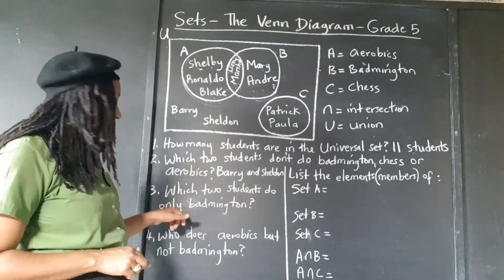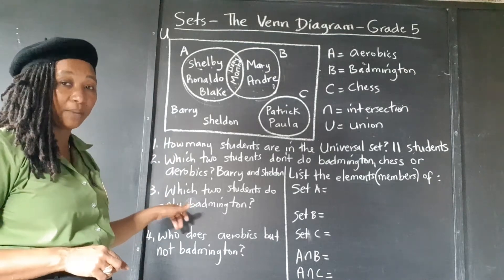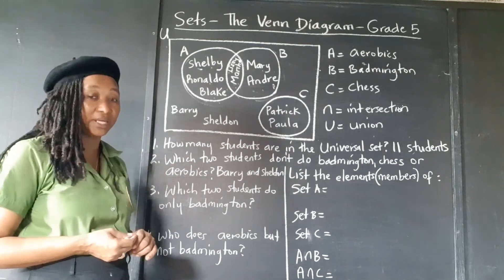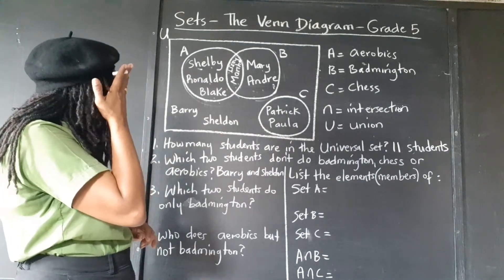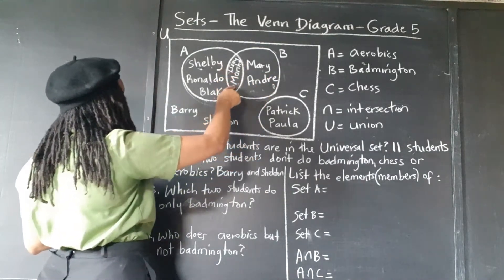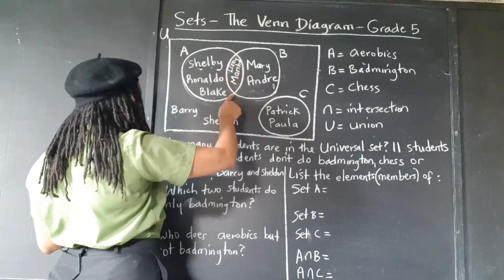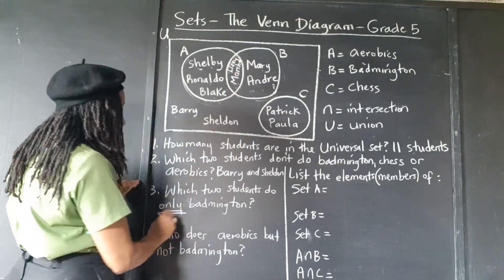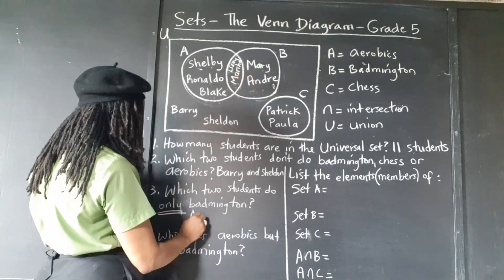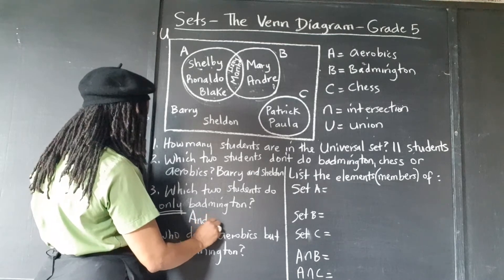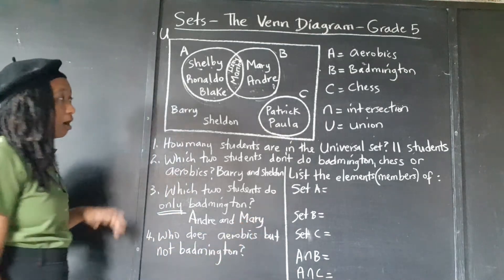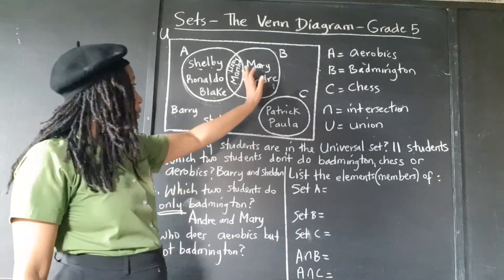Which two students do only badminton? We don't want the parts of badminton that overlap with aerobics, we want only badminton. Remember, Lizzie and Marsha do badminton but they also do aerobics, and the question says only badminton. So it would be Mary and Andre — they do only badminton.